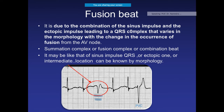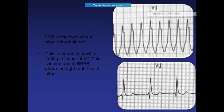A fusion beat results from the combination of a sinus impulse and an ectopic impulse producing a QRS complex that is different from both the normal sinus beat and the premature complex. It is another ECG sign that supports the diagnosis of ventricular tachycardia.